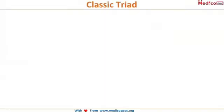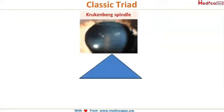Let's look at these beautiful pictures. The first point in our triad of pigmented glaucoma is Krukenberg spindle. This brown-colored pigment that you're seeing on the posterior surface of the cornea is dispersed pigment from the iris, which deposits on the cornea in the shape of a spindle — this is known as Krukenberg spindle.